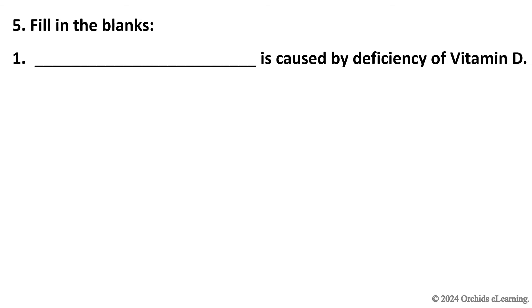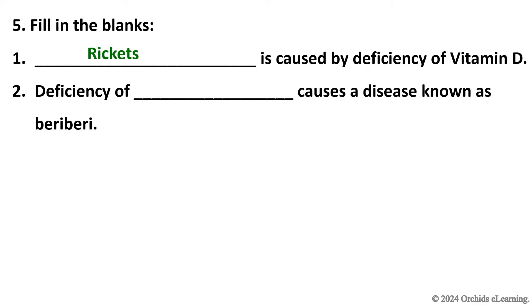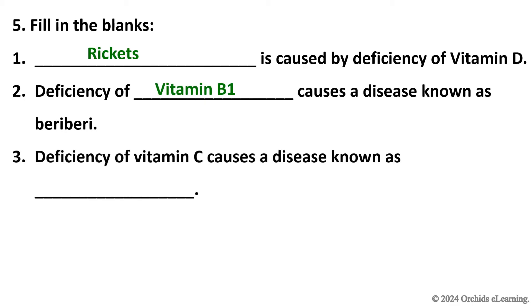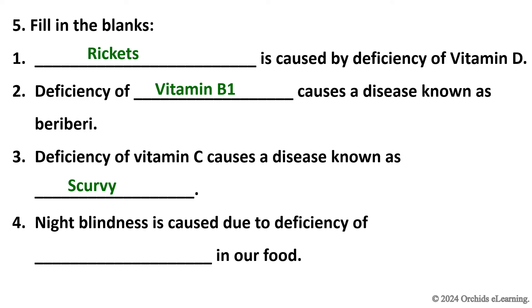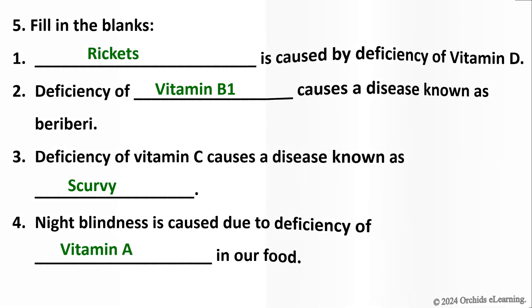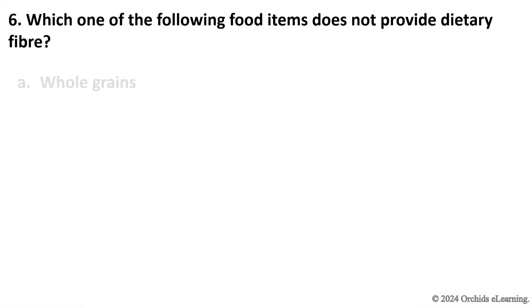Fill in the blanks. Rickets is caused by deficiency of Vitamin D. Deficiency of Vitamin B1 causes a disease known as Beriberi. Deficiency of Vitamin C causes a disease known as Scurvy. Night Blindness is caused due to deficiency of Vitamin A in our food.